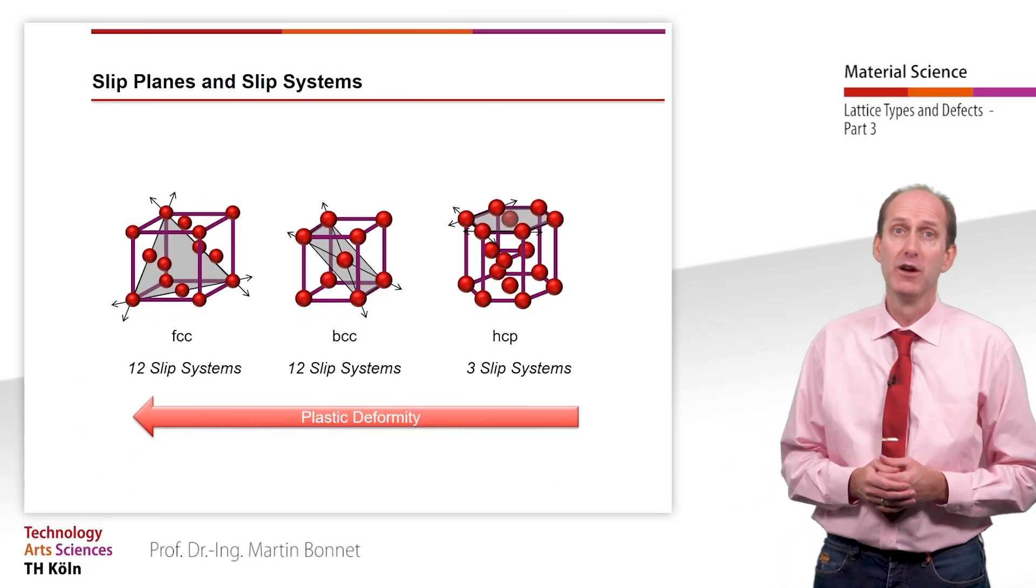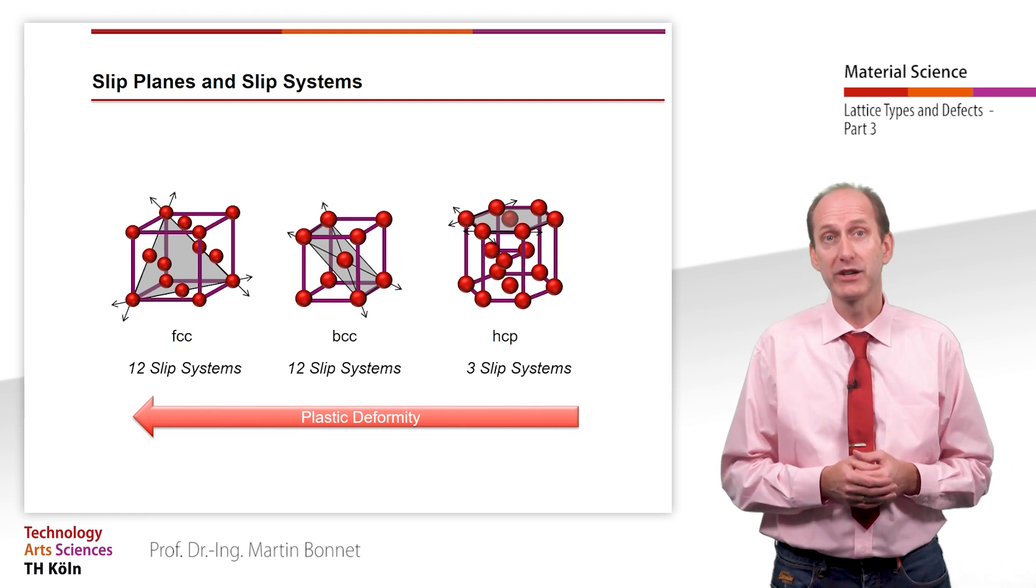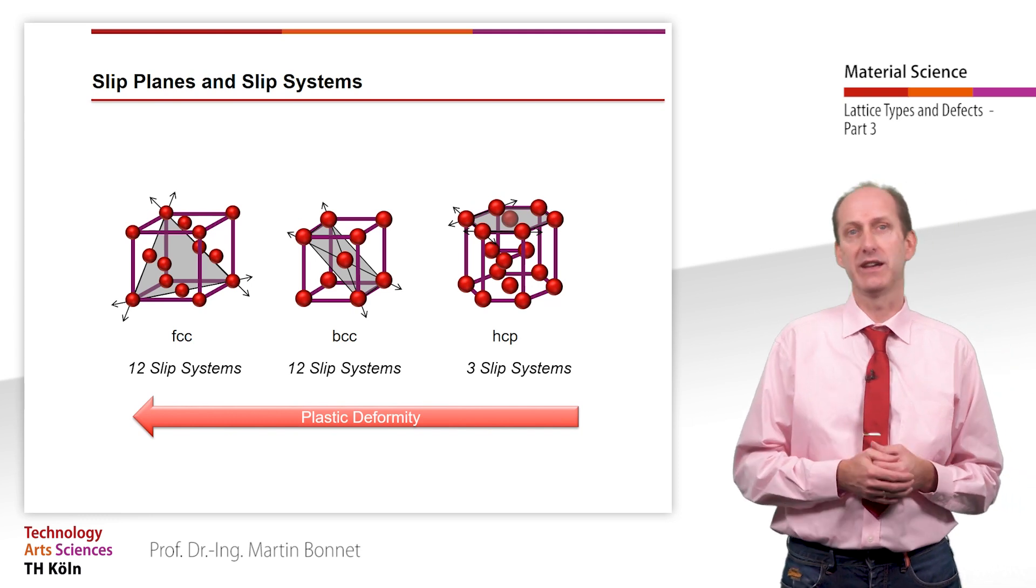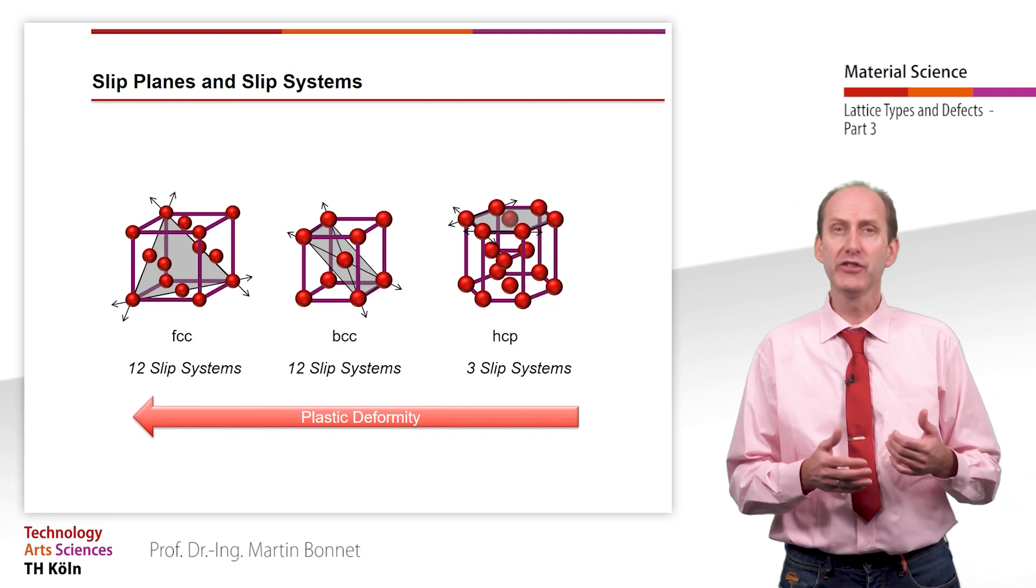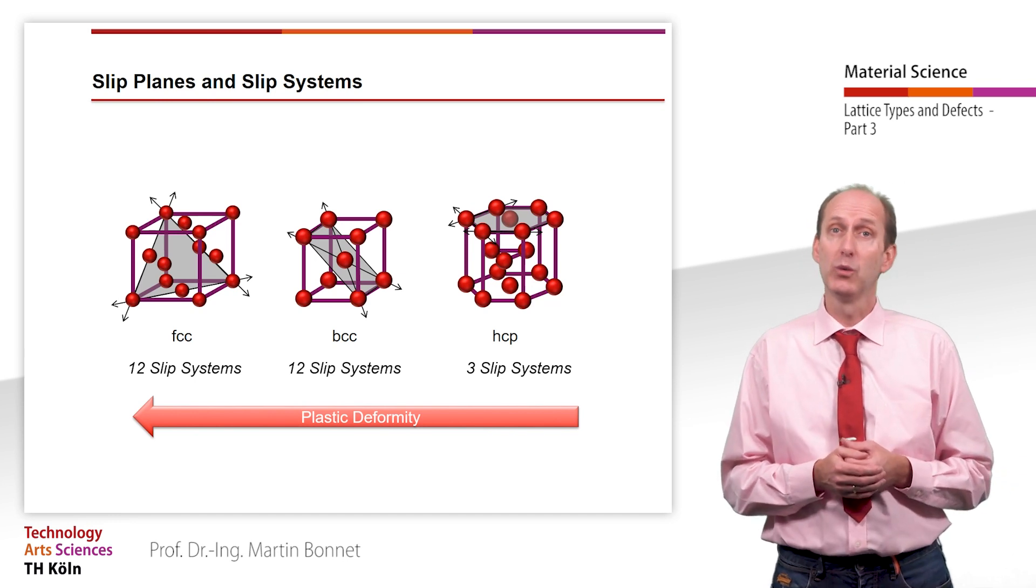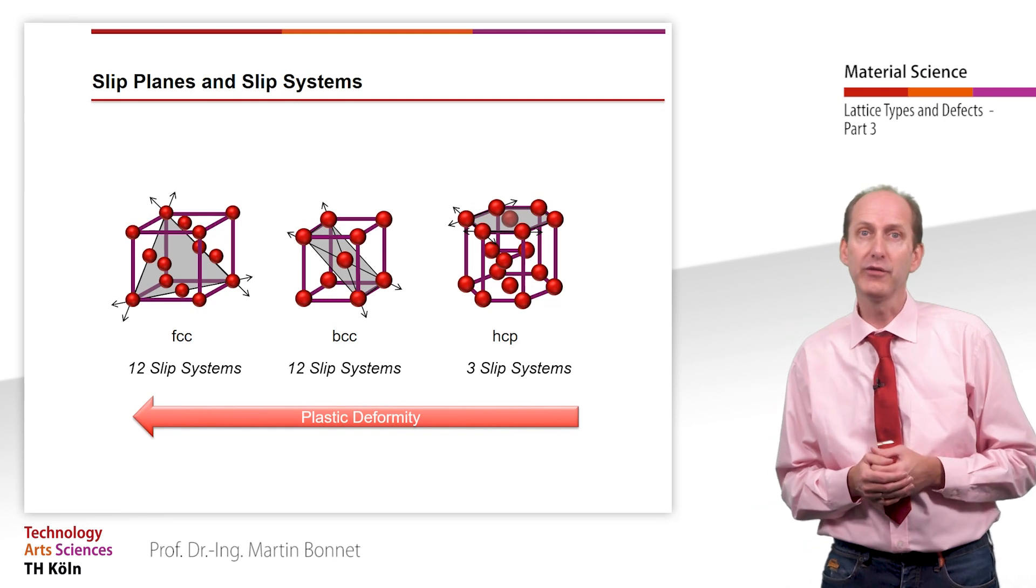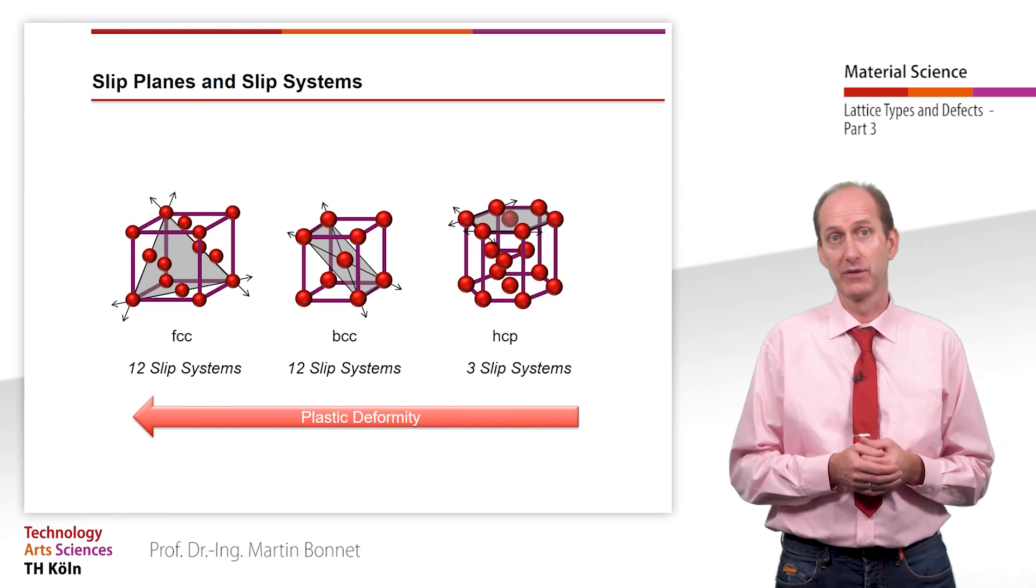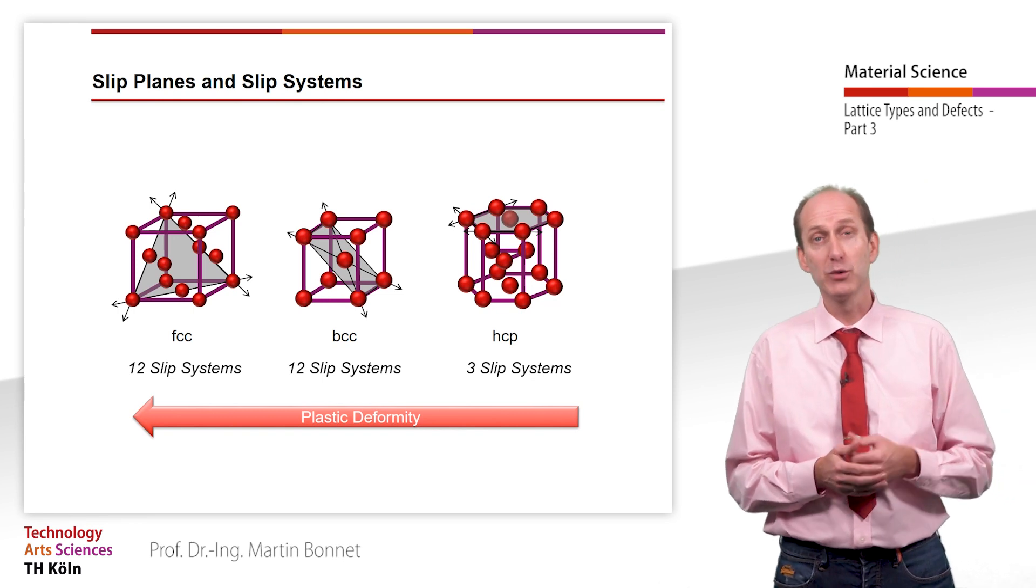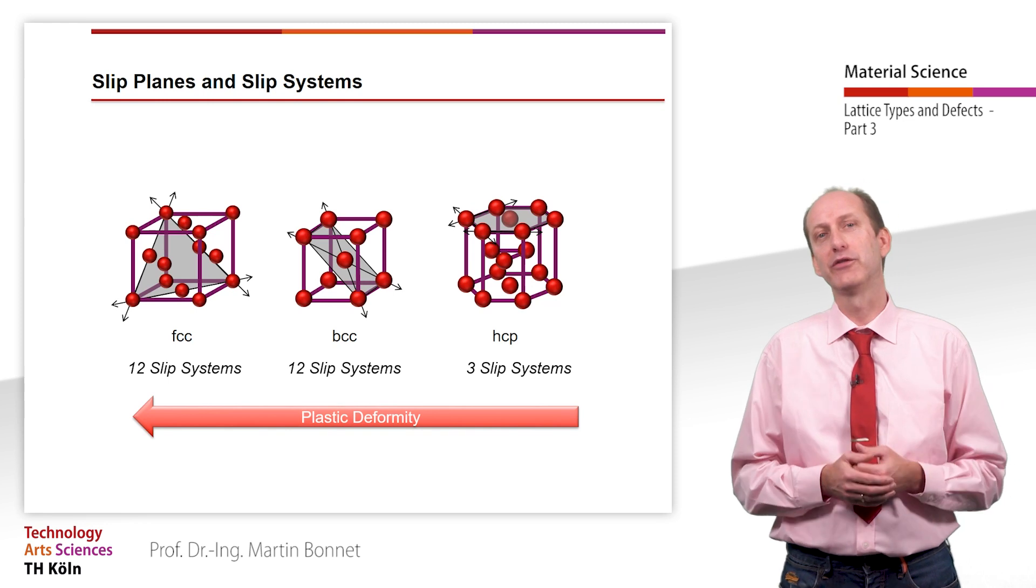In this figure, one respective slip plane with its possible slip directions is depicted for the FCC, BCC and HCP lattices. The FCC lattice has four such slip planes, each with three slip directions. This results in twelve independent slip systems. The BCC lattice has six slip planes, each with two slip directions, which also results in twelve slip systems.